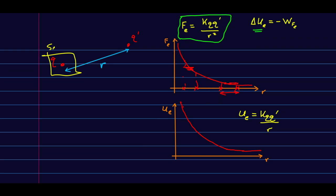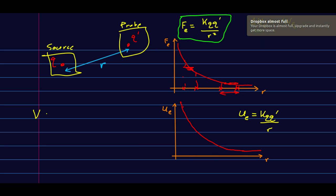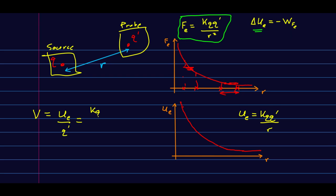If we now think of this one as our source, and this one as our probe, so we're mapping out the potential due to this charge q, then our potential is going to be Ue over q prime, right? That's our probe charge. And so that's just kq q prime over r, all divided by q prime. And that's just kq over r.